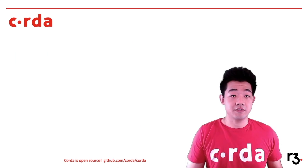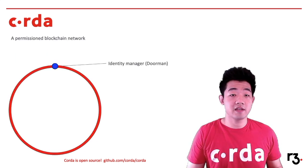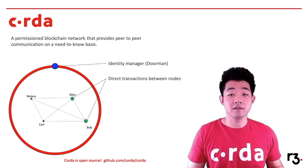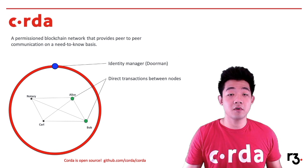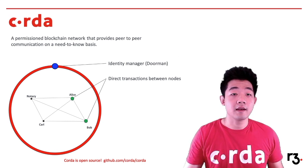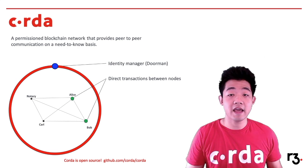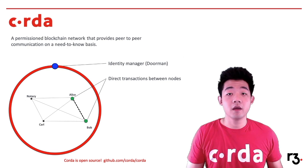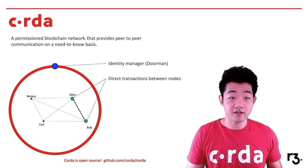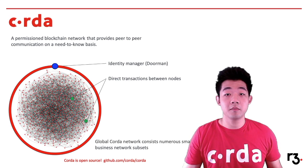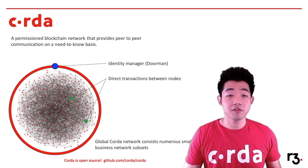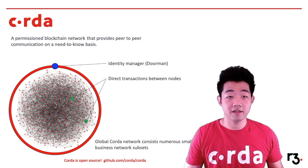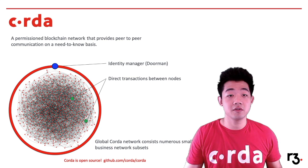If we take a look at Corda in detail, with Corda you can build a permissioned blockchain network that provides peer-to-peer communication on a need-to-know basis. In this simple example network of Alice, Bob, and Carl, unlike a public blockchain where transactions are broadcast over the network, Alice will be able to do a direct transaction with Bob, while she still benefits from the ledger immutability and trust that blockchain offers. And ideally, when we look at the global Corda network as a whole, it would be a composition of numerous small business networks altogether, and this is exactly how we keep up with our promise of delivering a cross-industry blockchain ecosystem.